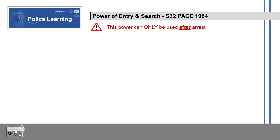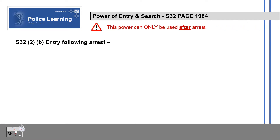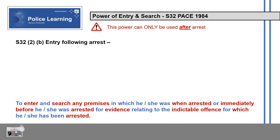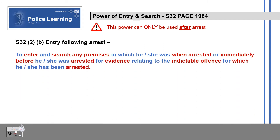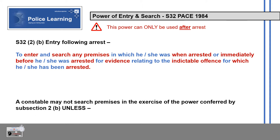This power can only be used after arrest. Section 32 allows a constable, following arrest, to enter and search any premises in which he or she was when arrested, or immediately before he or she was arrested, for evidence relating to the indictable offence for which he or she has been arrested.